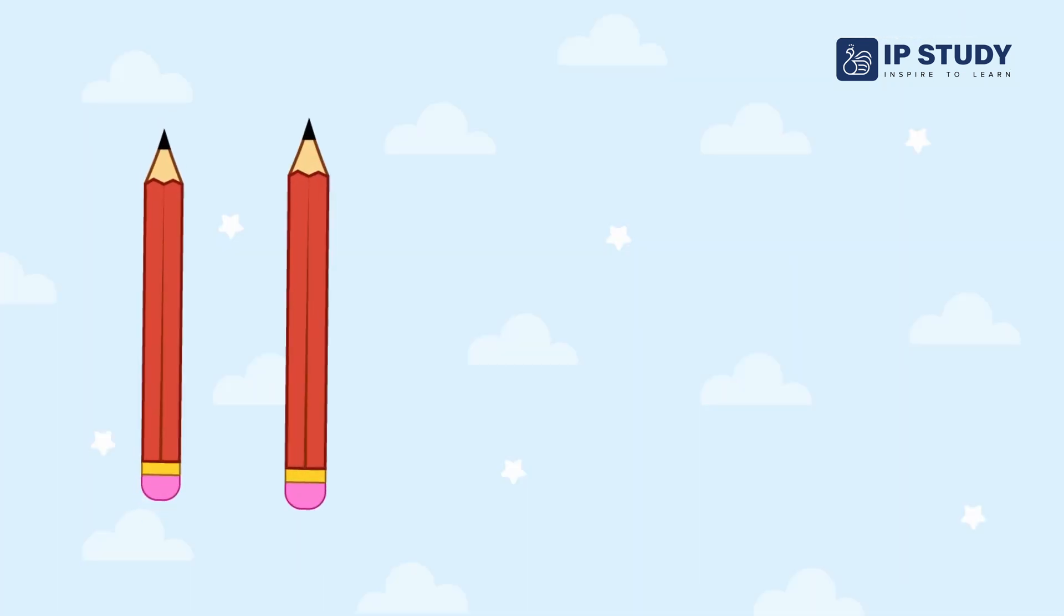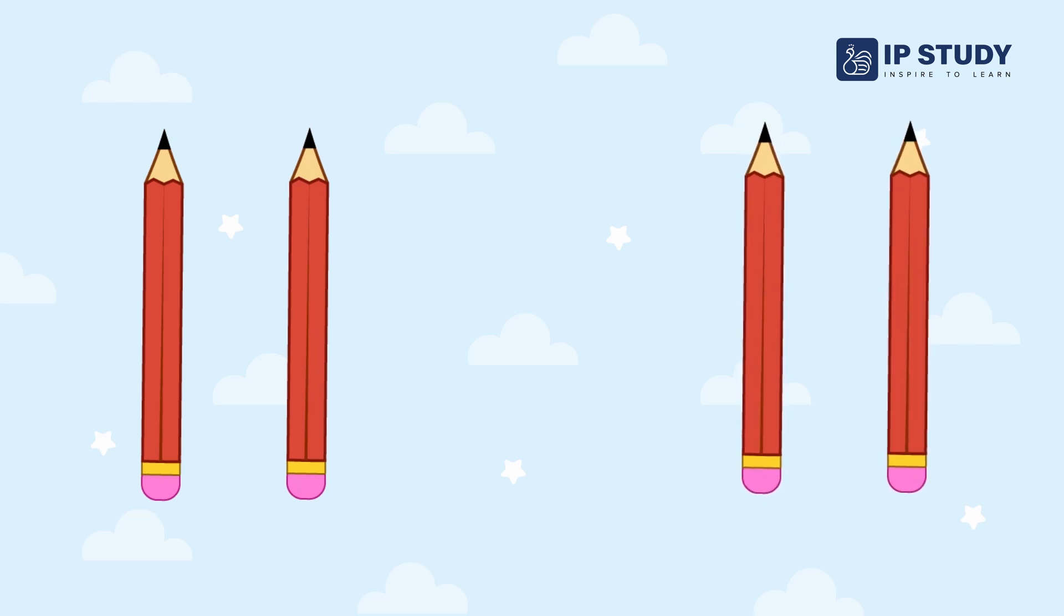Look at these pencils. We have two pencils on one side and two pencils on the other side. You know that both sides are equal. Then we use equal sign for both sides.